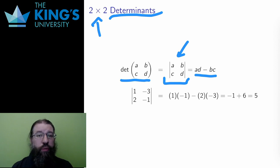For the matrix 1, negative 3, 2, negative 1, the AD minus BC pattern gives 1 times negative 1 minus 2 times negative 3, which is negative 1 plus 6, or 5.